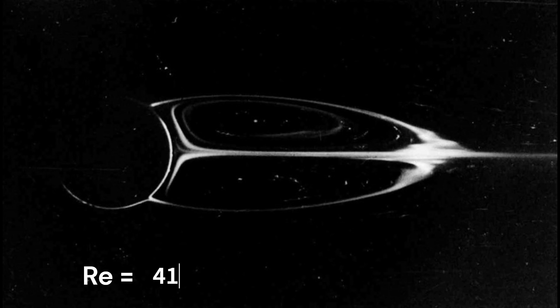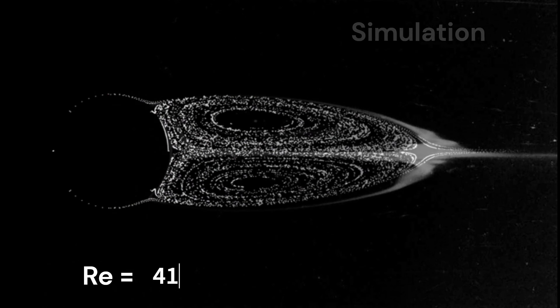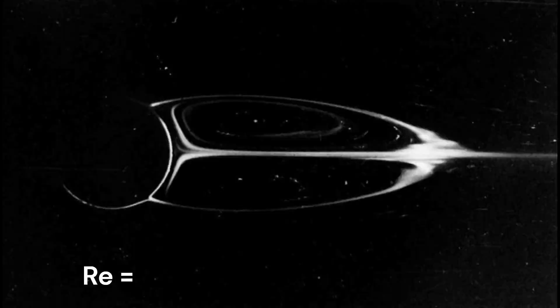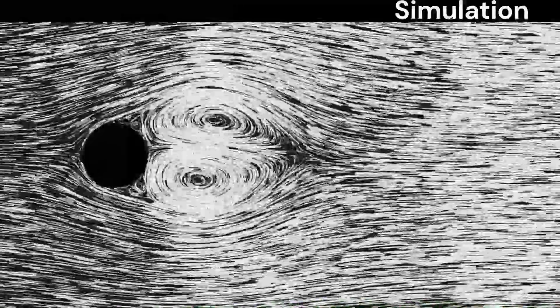The separation bubble keeps on growing until it is larger than the diameter of the cylinder itself. Of course, it cannot grow indefinitely, and at some point the system becomes unstable. Past a Reynolds number of 46, vortex shedding begins to occur.